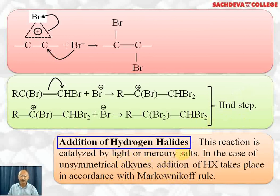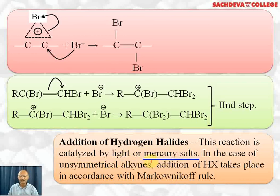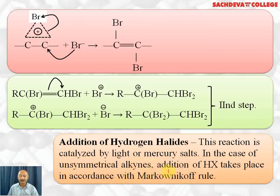Next, we consider the addition of hydrogen halide (HX). This reaction is catalyzed by light or mercury salts. In the case of unsymmetrical alkynes, addition of HX follows Markovnikov's rule, which was also applicable to unsymmetrical alkenes. So both unsymmetrical alkenes and alkynes follow Markovnikov's rule for the addition of polar compounds.